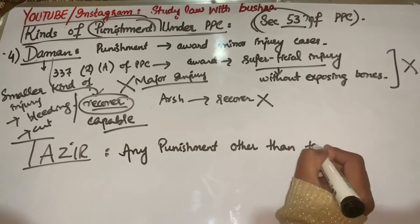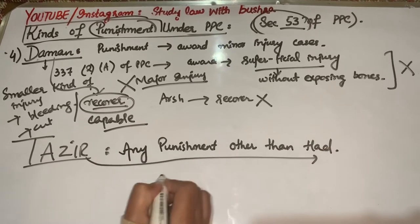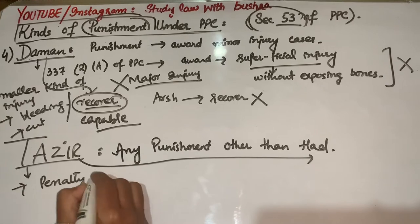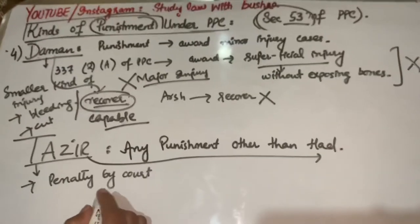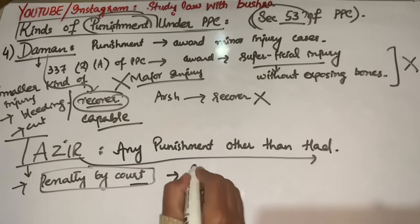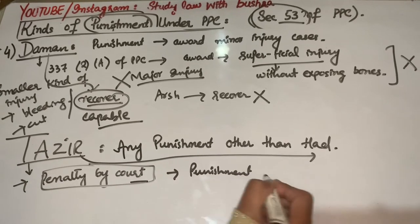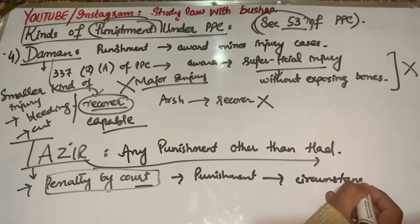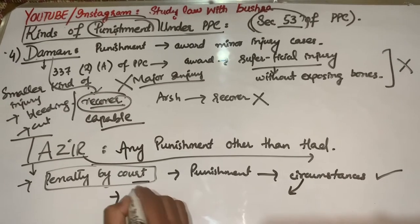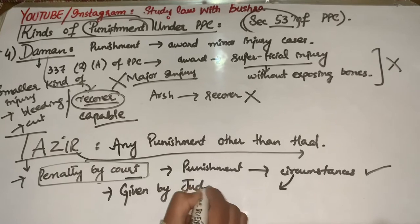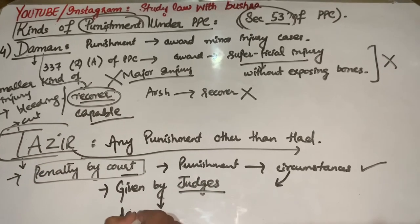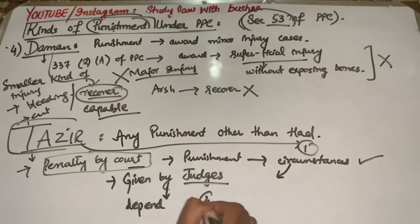Last kind of punishment is Tazir. Tazir kya hai — any punishment other than Hudood is called Tazir. Tazir ka matlab kya hai: koi bhi punishment, koi bhi penalty jo court ki taraf se kisi bhi bande ko di jati hai, by seeing the circumstances of the case — jo punishment judges award karte hain, us ko hum kehte hain Tazir punishment.